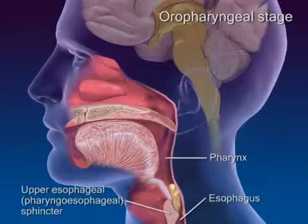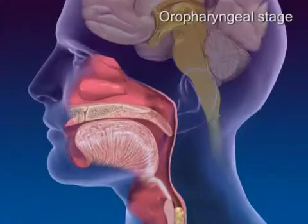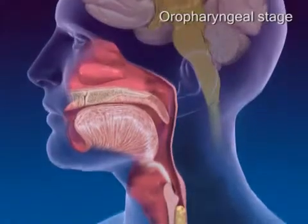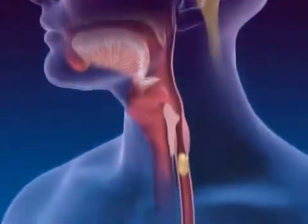As the upper esophageal sphincter relaxes, pharyngeal contractions drive the bolus into the esophagus. The oropharyngeal stage is done and breathing resumes.